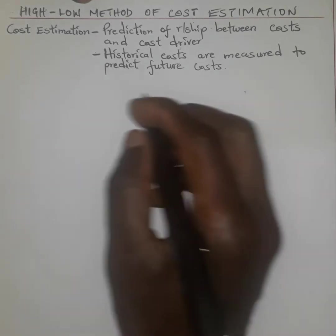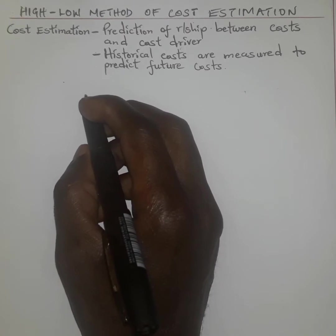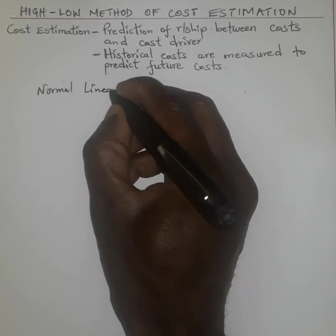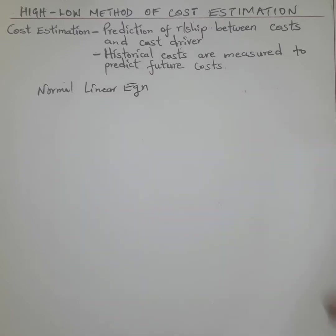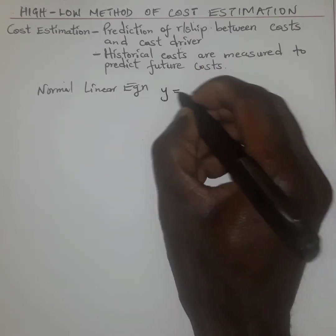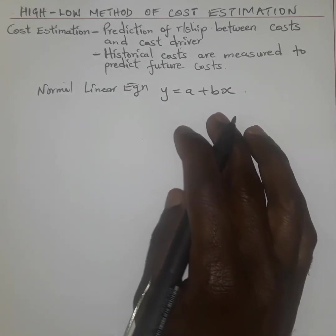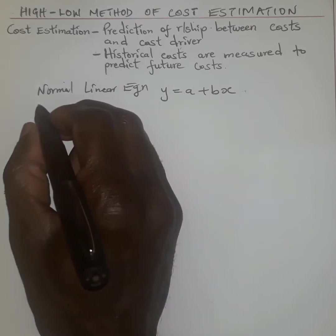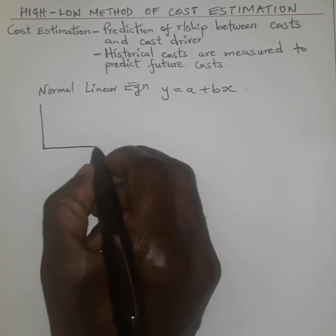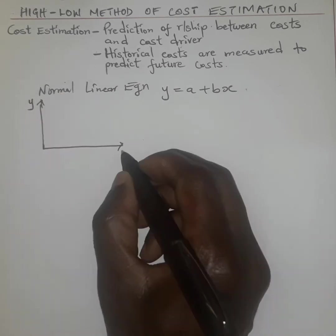When we talk about cost estimation using the High-Low method, this method will normally follow the normal linear equation. Our linear equation, which is famous in mathematical calculations, is y = a + bx. I want to illustrate this equation in terms of a graph and explain every item. On the Cartesian plane, we have the value of y and the value of x.